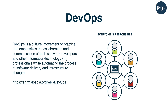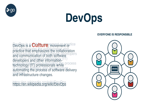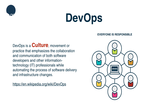As you've seen, continuous delivery and continuous deployment are technical practices. They are often used interchangeably with the term DevOps, but should not be. The key word in the definition you're seeing now is culture. DevOps is not a set of engineering practices, and it's definitely not a job title or role. This video series is focused on continuous delivery and deployment, but you should know that adopting a DevOps culture is important to your success.